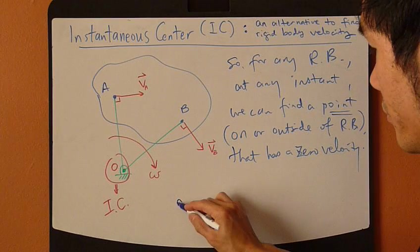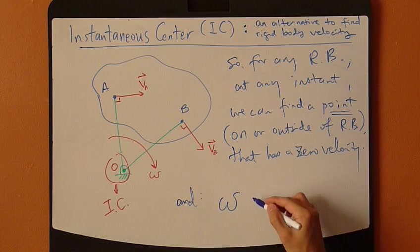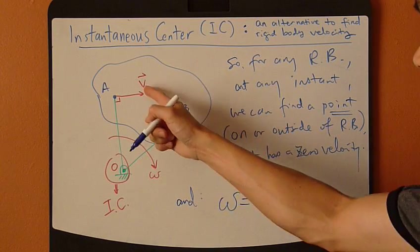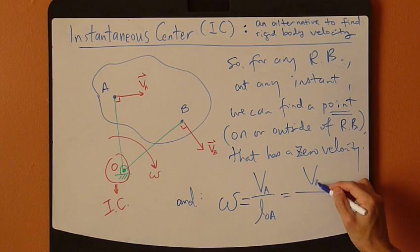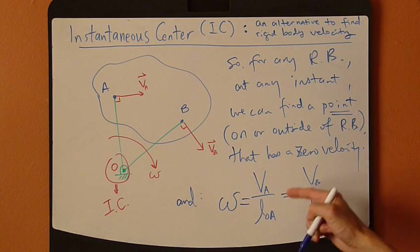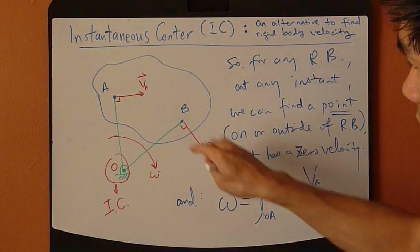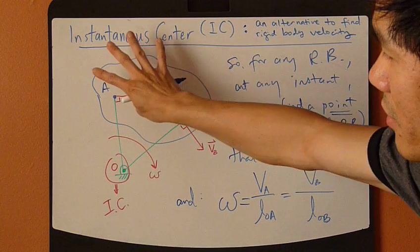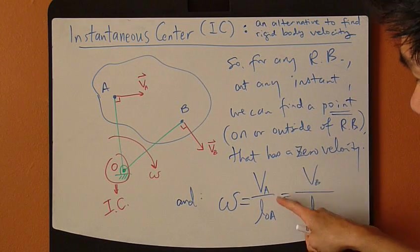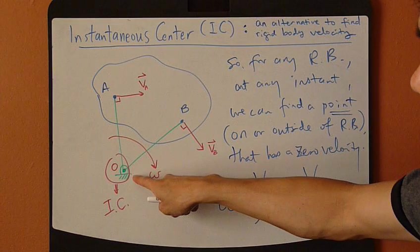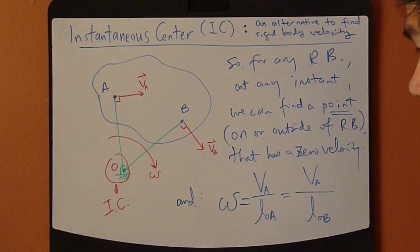And the main equation now would be the angular velocity equals to velocity of A divided by L_OA, also equals to velocity of B divided by L_OB. This is a constant. This is the angular velocity of this rigid body at this very instant. Equals to velocity of A, the magnitude of velocity of A divided by the distance between instantaneous center to point A, also equals to velocity of B divided by L_OB.